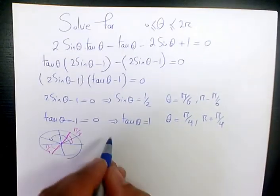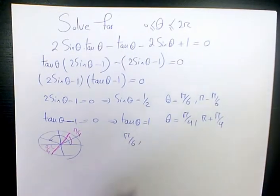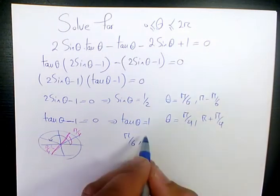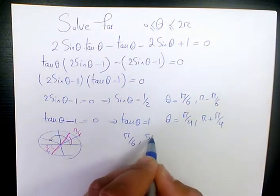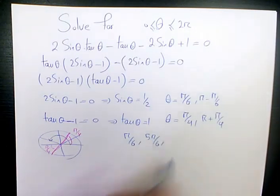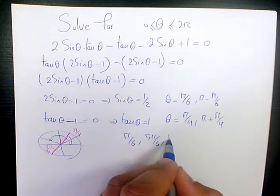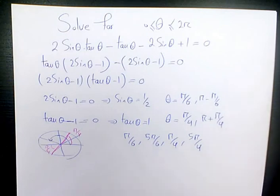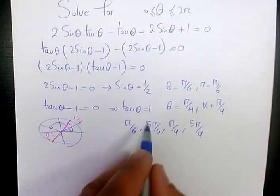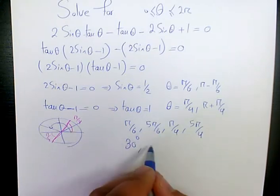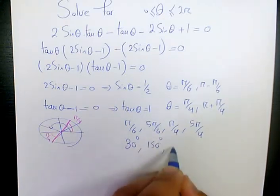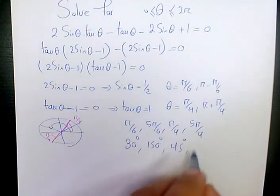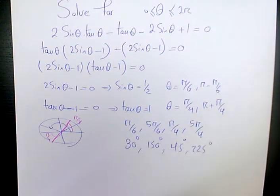So we have four answers: π/6, π - π/6 which is 5π/6, π/4, and 5π/4. In terms of degrees, it's going to be 30 degrees, 150 degrees, 45 degrees, and 225 degrees.